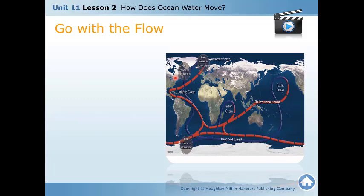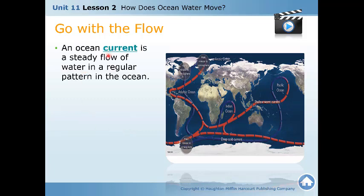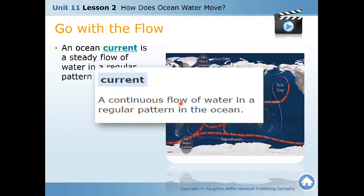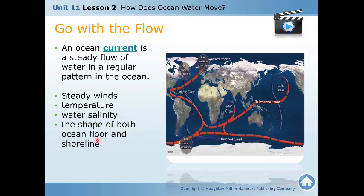Now go to page 508: Go With the Flow. An ocean current is a steady, flowing movement of water in a regular pattern in the ocean. Ocean currents have predictable effects and some even have names — for example, the Gulf Stream, which is a warm Atlantic Ocean current that flows from south to north along the east coast of North America.